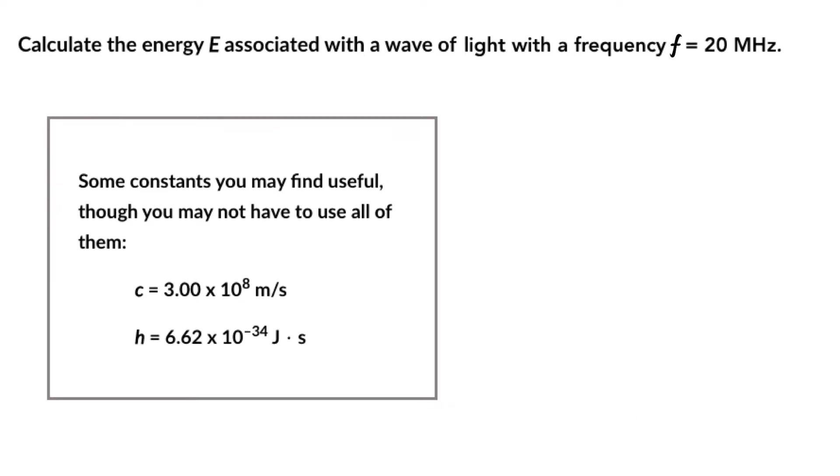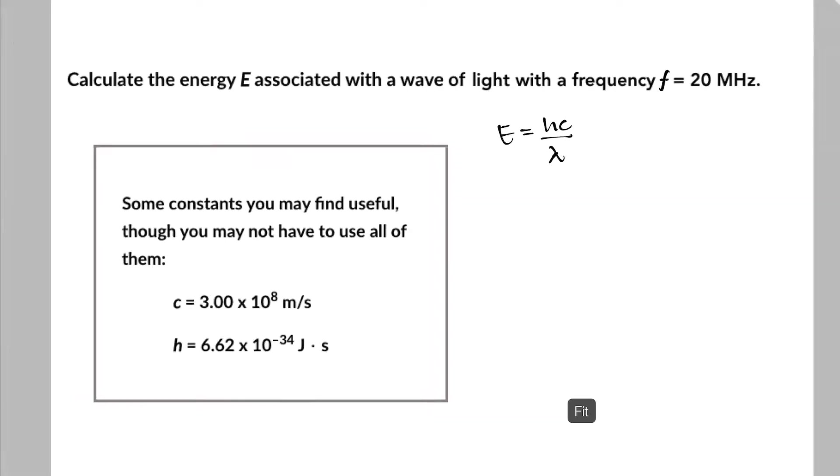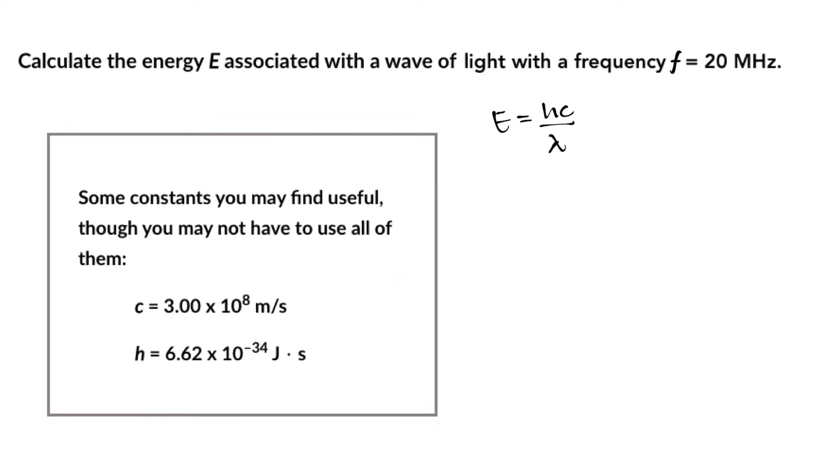However, as is the case with any situation where you need to find the energy associated with a wave of light or a photon of light, you're going to use E equals hc over lambda. The issue we run into this time is that we don't have the wavelength. Instead, what we do have is the frequency. So the frequency is given to us, but not the wavelength.